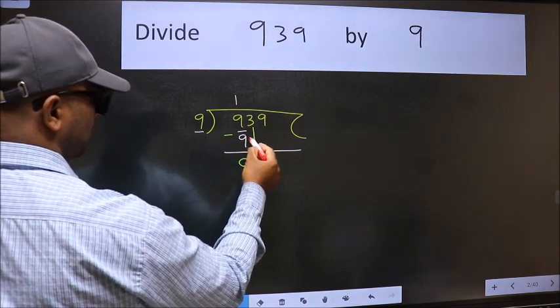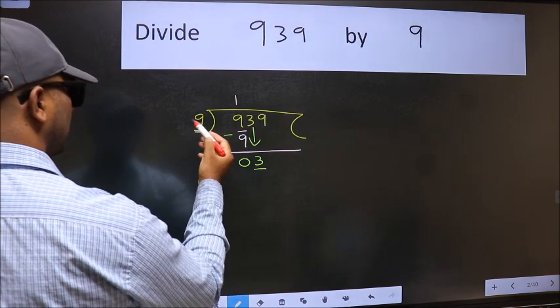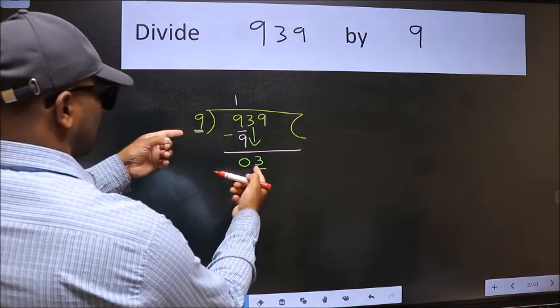After this, bring down the next number. So 3 down. Now here we have 3 and here 9. 3 is smaller than 9.